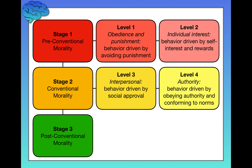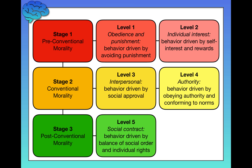Now let's get to post-conventional morality — not everyone makes it here; this is the cream of the crop. Level 5 is social contract, where behavior is driven by a balance of social order and individual rights. Someone at this level might talk about how rules and laws exist for a reason — if everyone committed a crime whenever they thought they had a legitimate reason, society would self-destruct. But they also recognize the individual rights of both Heinz, who wants his wife to live, and the druggist, who invented the drug and has rights to it.